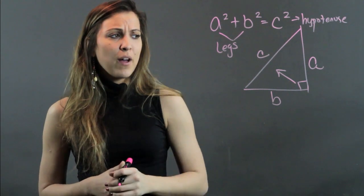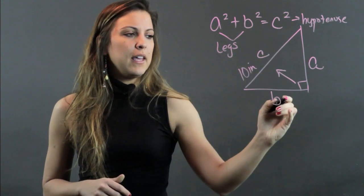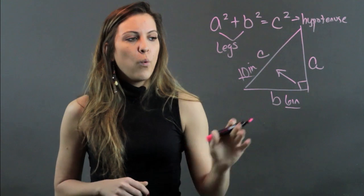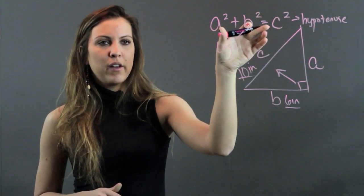So if I'm given C and B, for example, let's say I'm told that this is 10 inches and I'm told that B is 6 inches and I'm asked to find the value of A. When I go to substitute into the Pythagorean theorem, I have to be sure that I substitute into the correct variable.